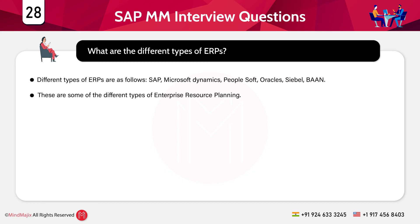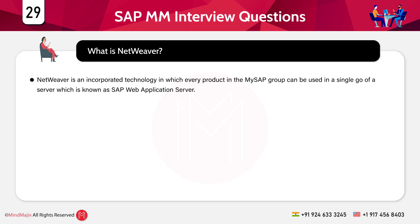The next question is: explain different types of ERPs. Different types include SAP, Microsoft Dynamics, PeopleSoft, Oracle, Siebel, BAN, and so on — these are competitors to SAP. The next question is: what is NetWeaver? NetWeaver is an integrated technology in which every product in the MySAP group can be used on a single server known as the SAP Web Application Server.